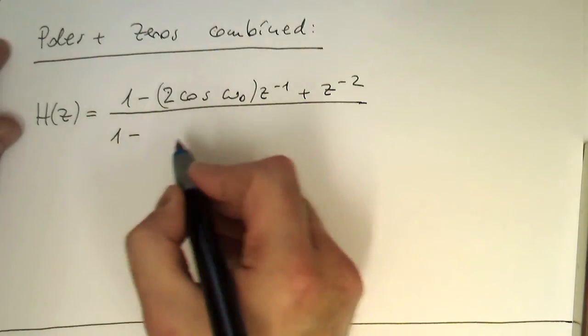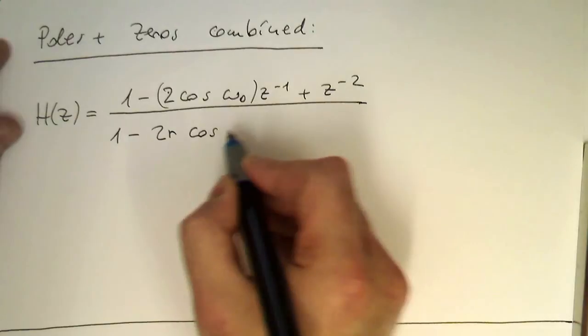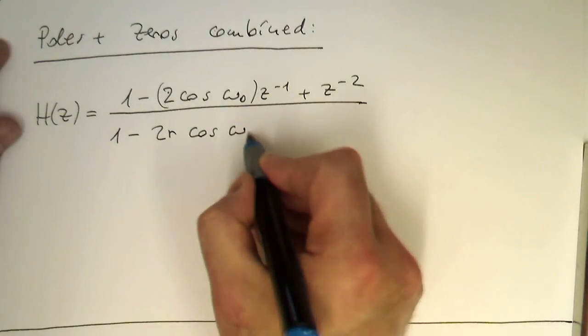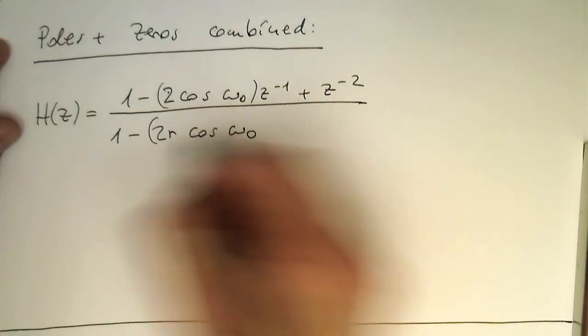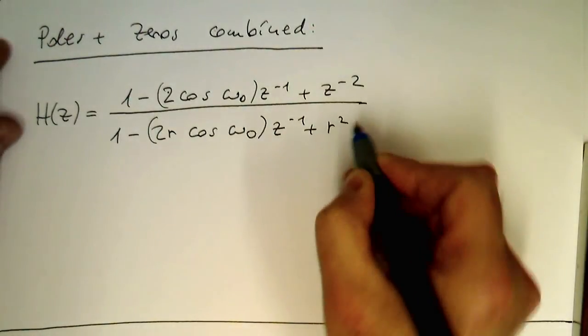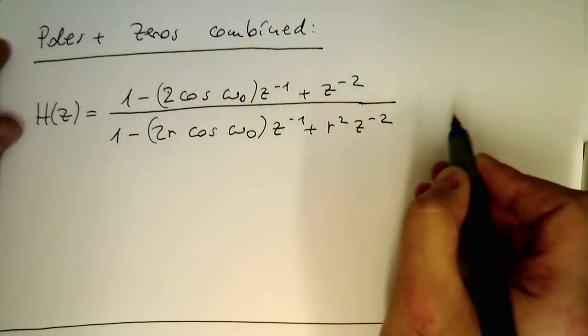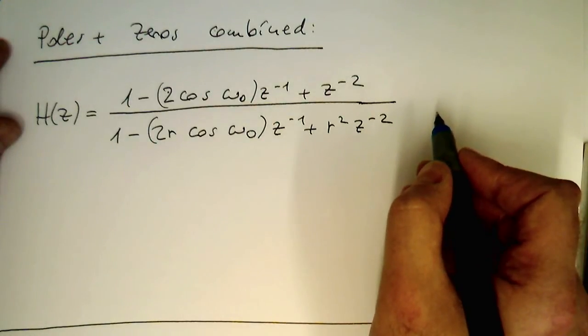And then this is one minus two r cosine omega zero z to minus one plus r square z to minus two. So this gives us the combined transfer function here.